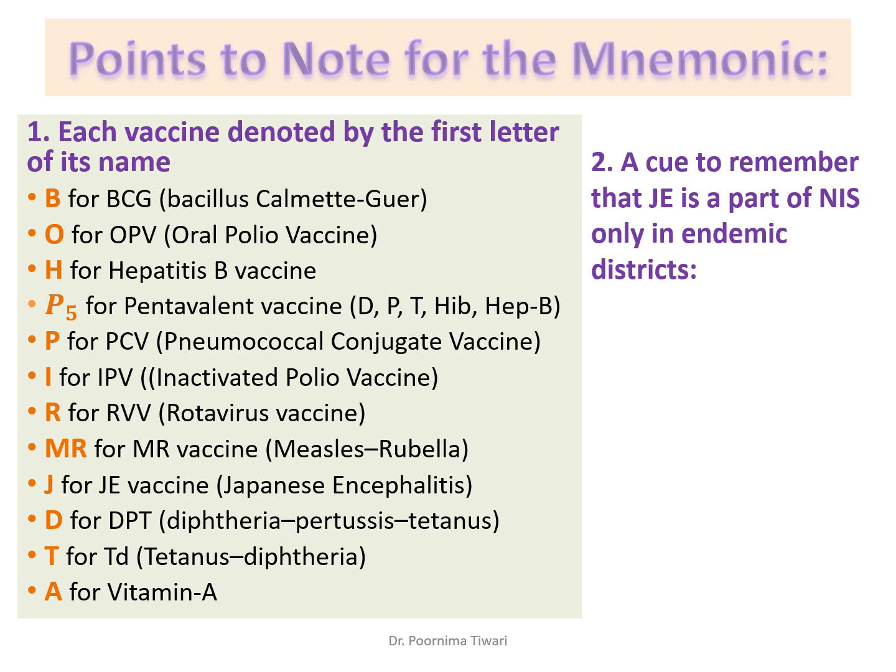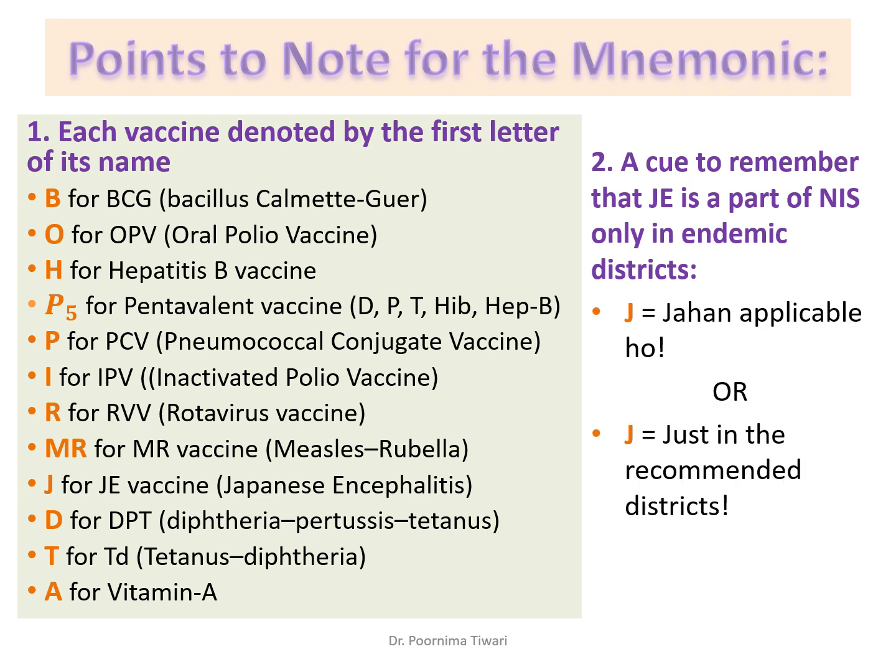Remember that JE — Japanese Encephalitis vaccine — is not given in the entire country; it is given only in the endemic districts. So J can also mean 'jahan applicable' in Hindi, meaning just in the recommended districts.